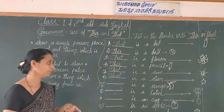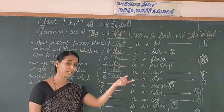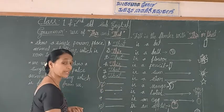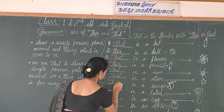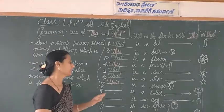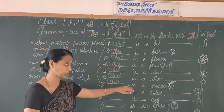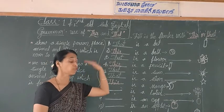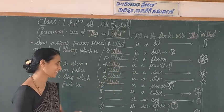Next, seventh one: dash is a mango. Is the mango near to me or far away from us? Yes, the mango is near to me, so we can use 'this'. This is a mango. Eighth one: dash is a lotus. Is the lotus far away from us or near to me? Yes, the lotus is far away from us, so we can use 'that'.